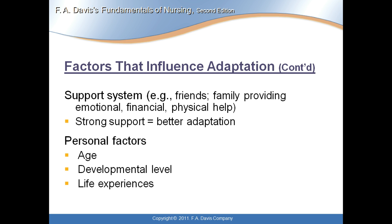You need a support system — family, friends, emotional support, financial support, and physical help. Strong support leads to better adaptation. For those in nursing school with large families, if they can help raise kids and organize your time, that strong support allows you to adjust to the stress. Personal factors also include age, developmental level, and life experiences. An 18-year-old may not adapt as well as someone who is 50 or 60, because they've been through the trials and tribulations of life — that's where wisdom and experience come into effect.